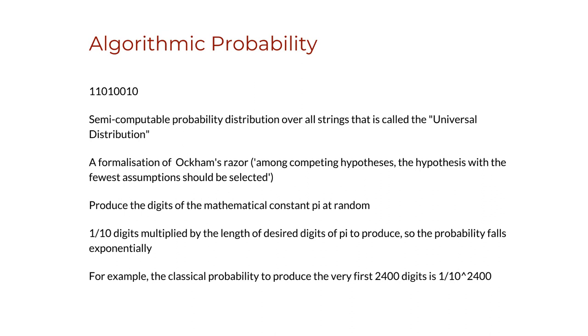And indeed, one can see from the definition of algorithmic probability that every computer program producing the data S is not only retained, but it contributes to its algorithmic probability even though it is the shortest computer program that contributes the most and is thus the most likely producing the data, according to algorithmic probability.